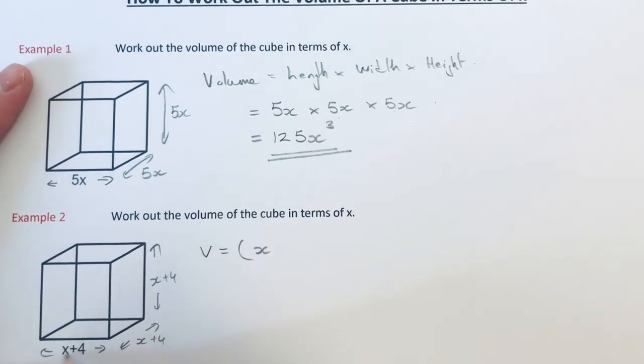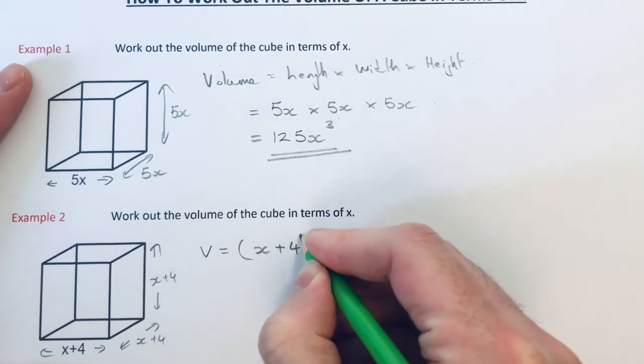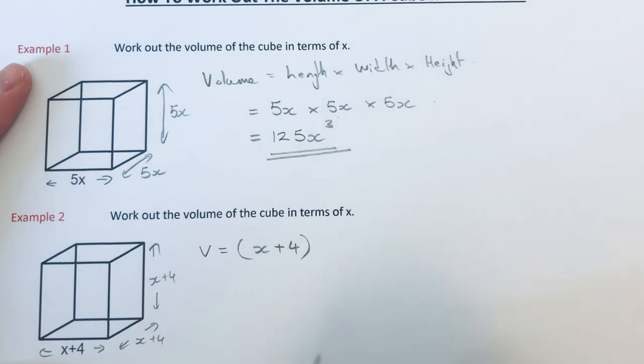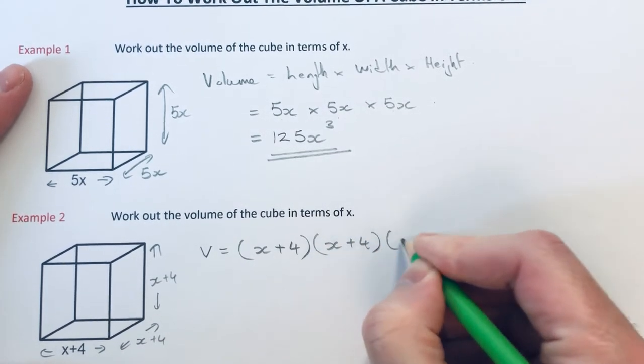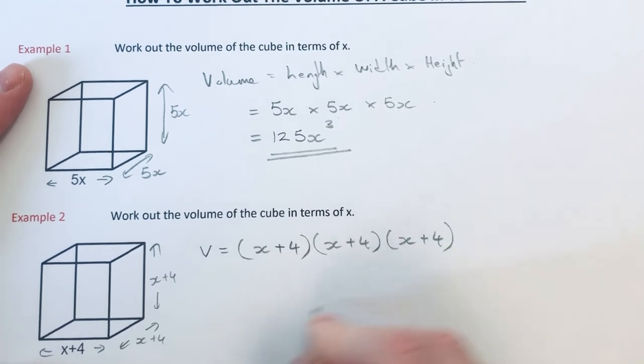So this time it's a two term expression. So I'm going to put the x plus 4 inside the bracket. So it's x plus 4 times x plus 4 times x plus 4.